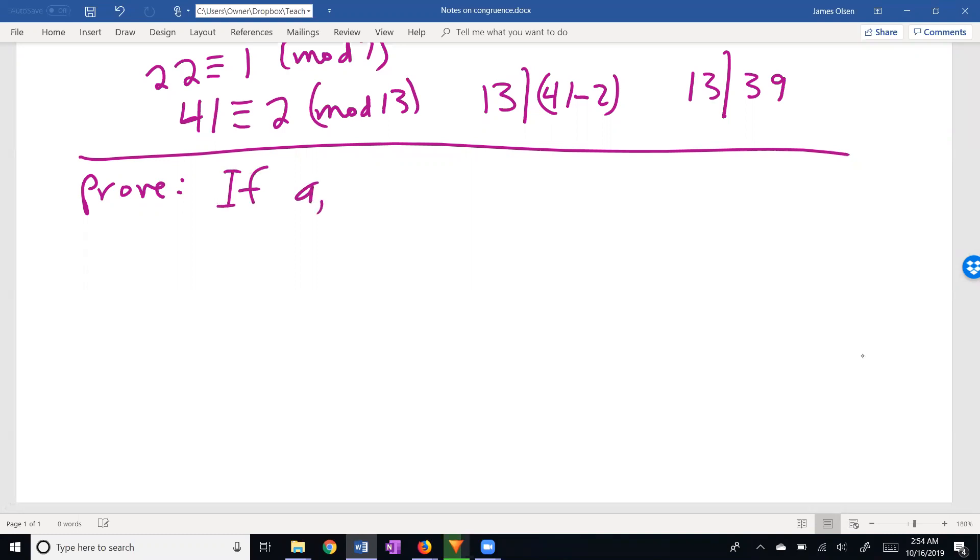Prove: If A and M are integers, and M is positive, then A is congruent to A mod M. Now, we cannot use our conclusion to prove our conclusion, but we do have an eye on the prize, and we do know what's going to be the last line of the proof. So we might think about what's going to be the second to the last line of the proof.